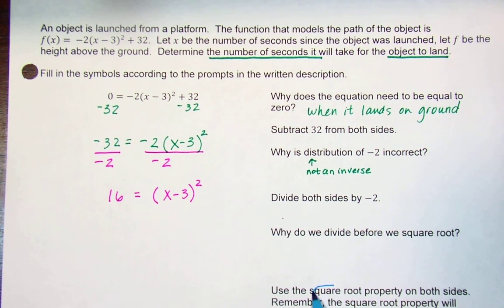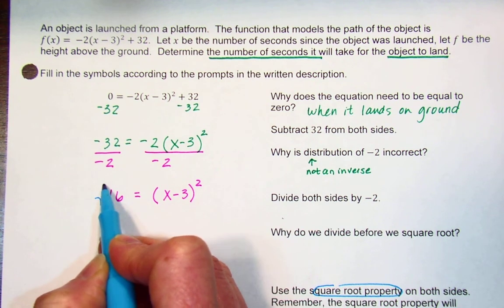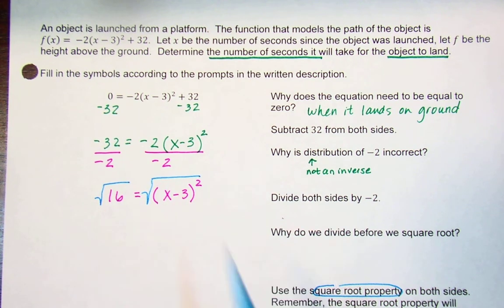Now, how do we go from here? It says we're going to use the square root property on both sides. Remember, the square root property will produce two roots: one that's positive and one that's negative. When I apply that square root property to both sides, the square root of 16 is 4.